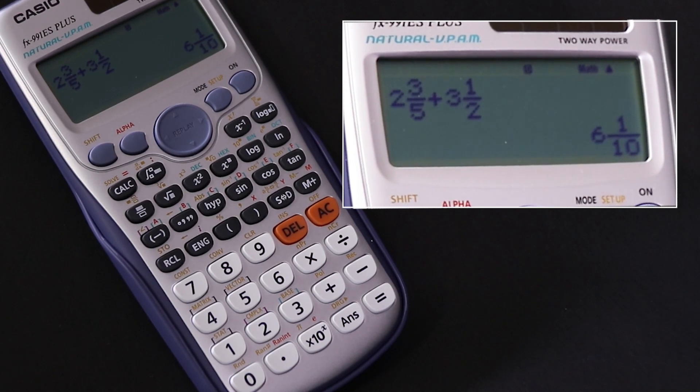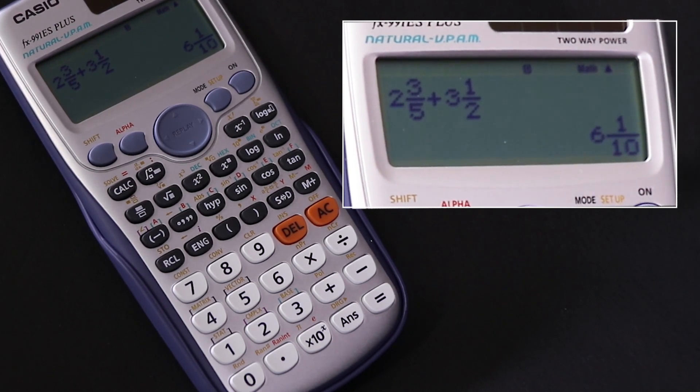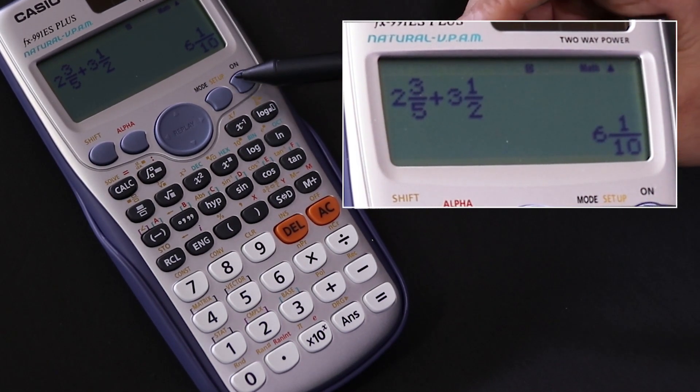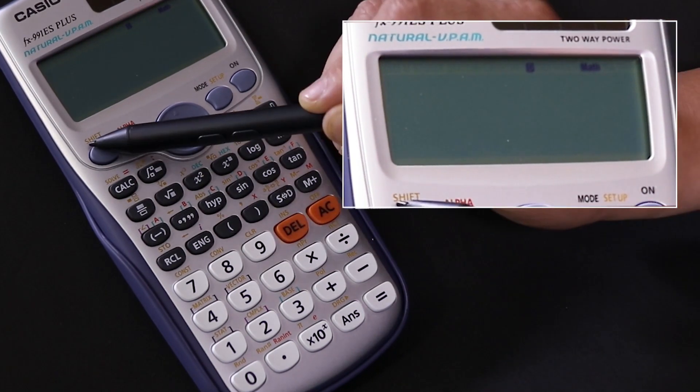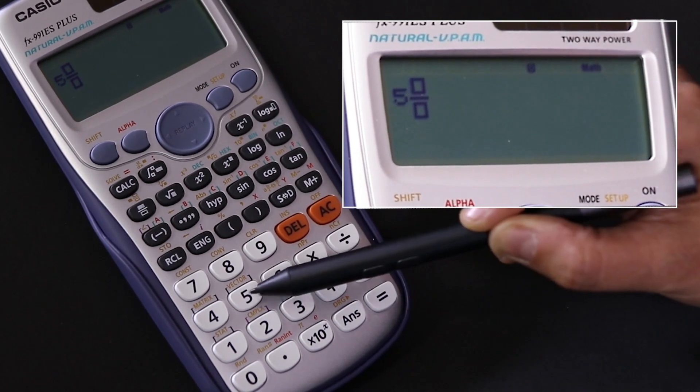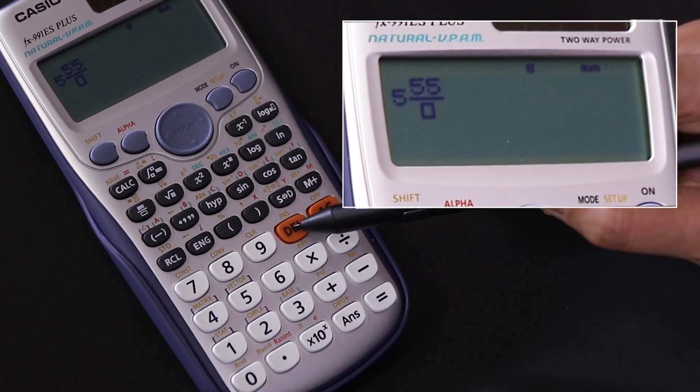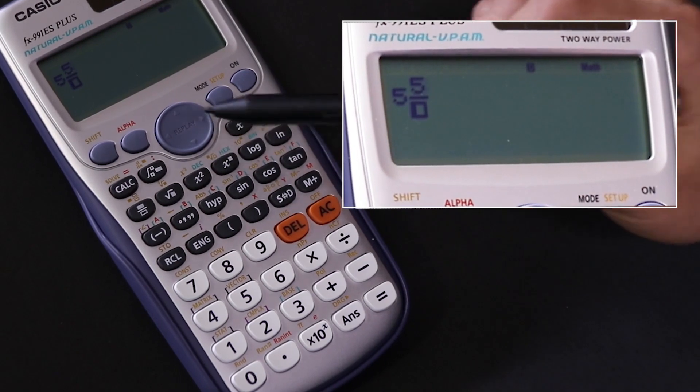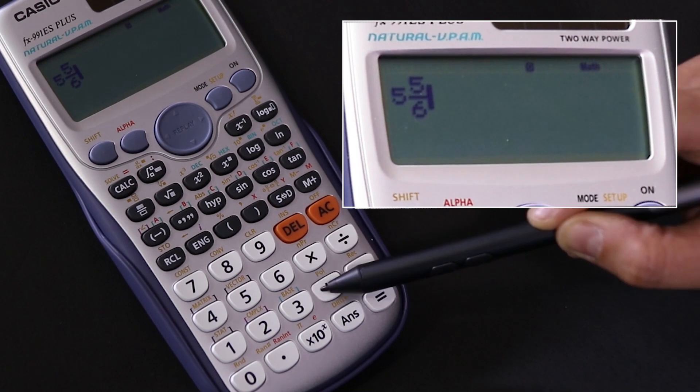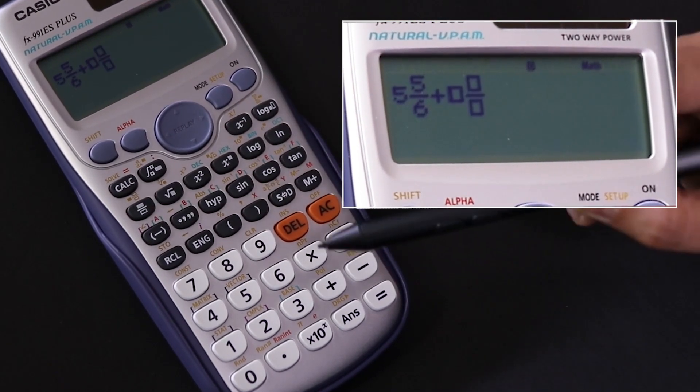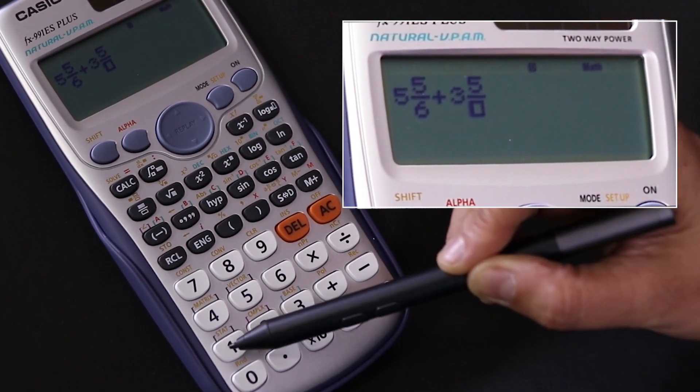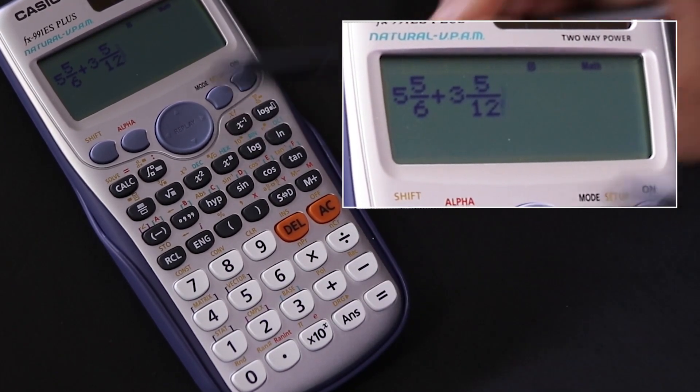Let's try another problem, and that would have been 2b letter a, which I wrote earlier. Let's press—this says shift divide, 5, arrow to the right, 5/6, then arrow to the right, plus, and then shift divide. That will be 3, arrow to the right, 5/12, arrow to the right.